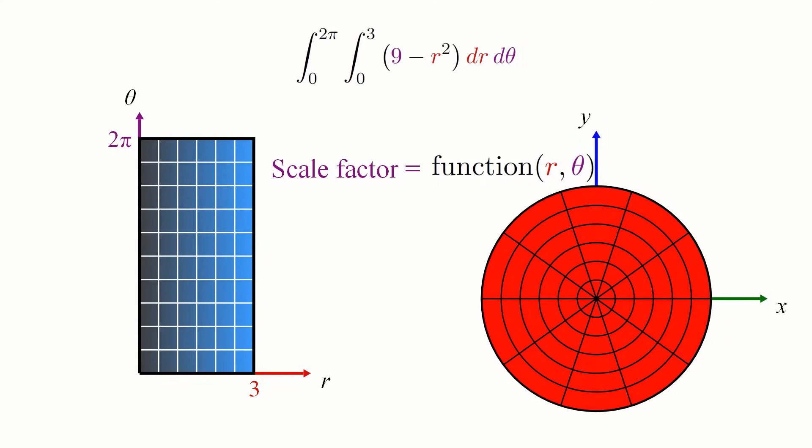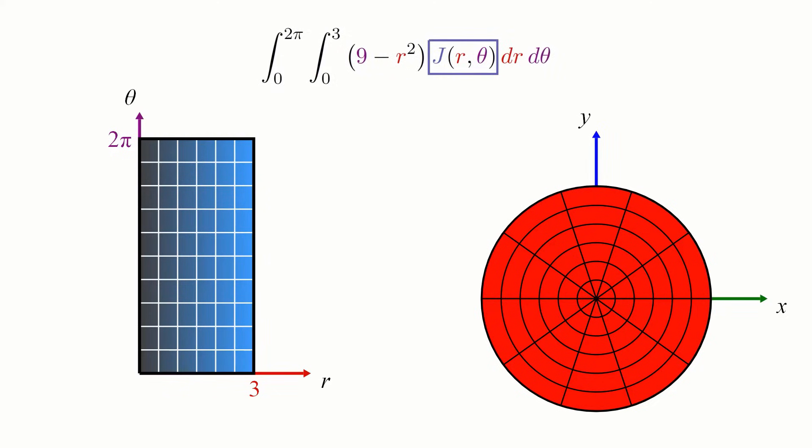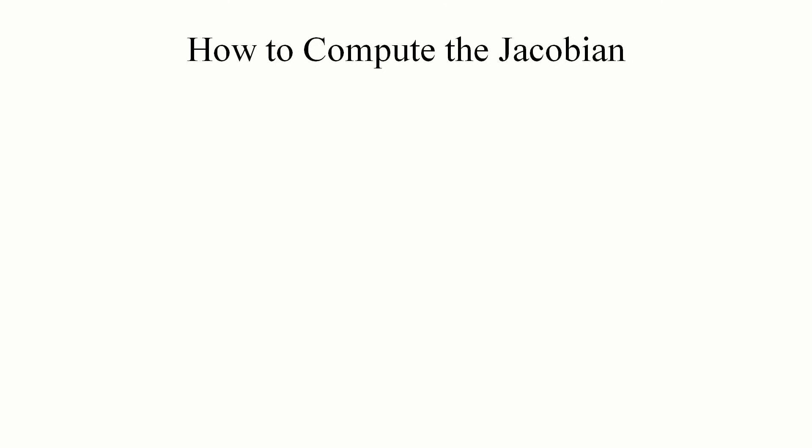That means the scale factor itself will be a function of r and theta. This scale factor function is called the Jacobian, often represented with a capital J, and we stick it in our integral expression right next to the differentials dr and d theta. But how do we compute this scale factor? Well, it's actually computed by taking the determinant of a certain square matrix. Here's how it works.